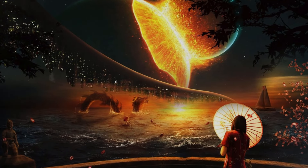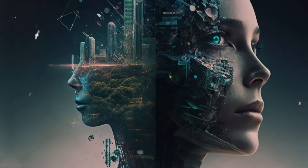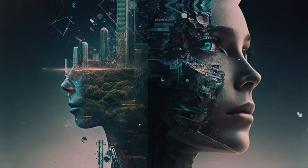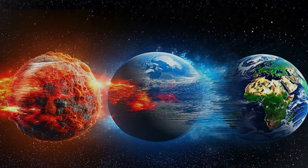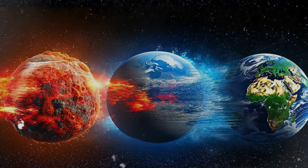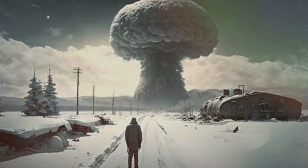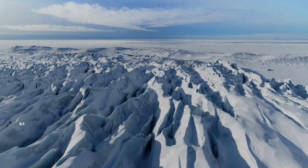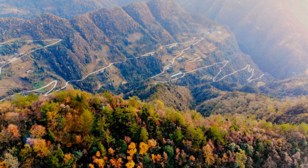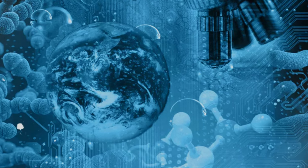According to this theory, a cataclysmic event, potentially extraterrestrial in origin or the result of advanced human technology, radically altered the course of Earth's history. This event is believed to have been so powerful that it caused a nuclear winter, a phenomenon that not only encased Antarctica in a thick layer of ice, but also transformed once flourishing lands into barren deserts. Despite lacking firm scientific evidence, this theory captivates the imagination.